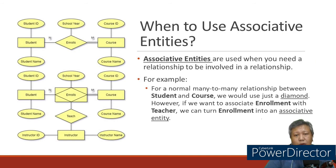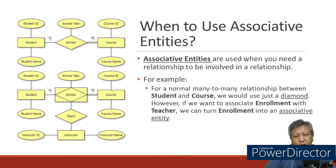Associative entities occur when the relationship itself is related to another entity. In the diagram, the relationship 'enrolls' is not just a relationship between student and course — it becomes an associative entity that is related to an instructor. So the instructor is related not directly to the course or student, but to the associative entity 'enrolls'.